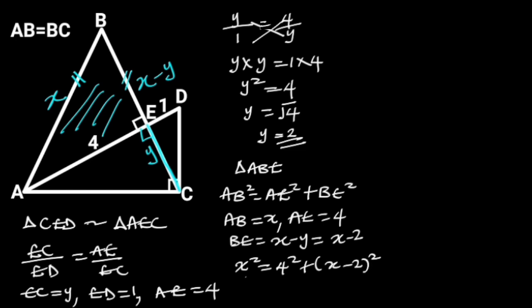Simplifying this will give us X squared is equal to 16 plus X squared minus 4X plus 4. Collecting like terms will give us X squared minus X squared plus 4X is equal to 16 plus 4.